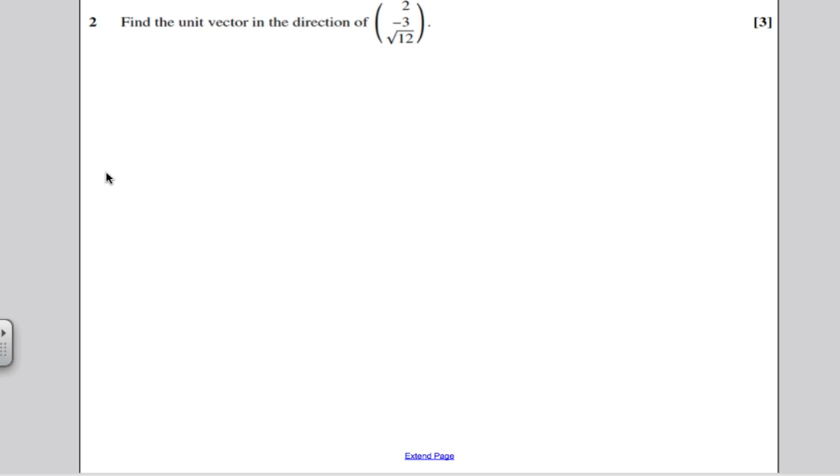Let's take a look. Very straightforward question, only 3 marks. It says find the unit vector in the direction of this vector here. The first thing I might do is I might let A be this vector, just so I've got some notation, 2 minus 3 and root 12.